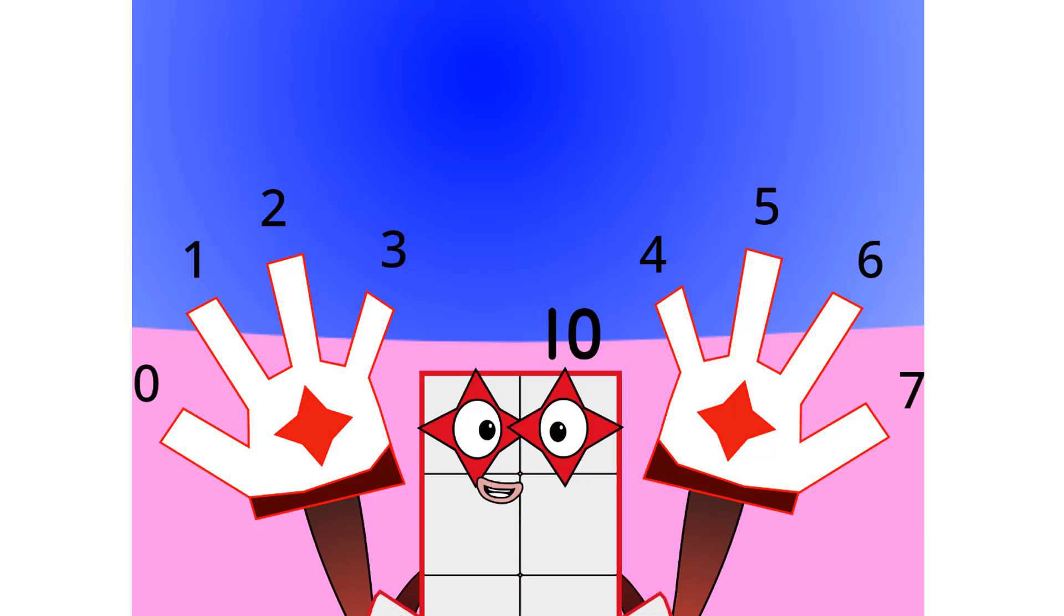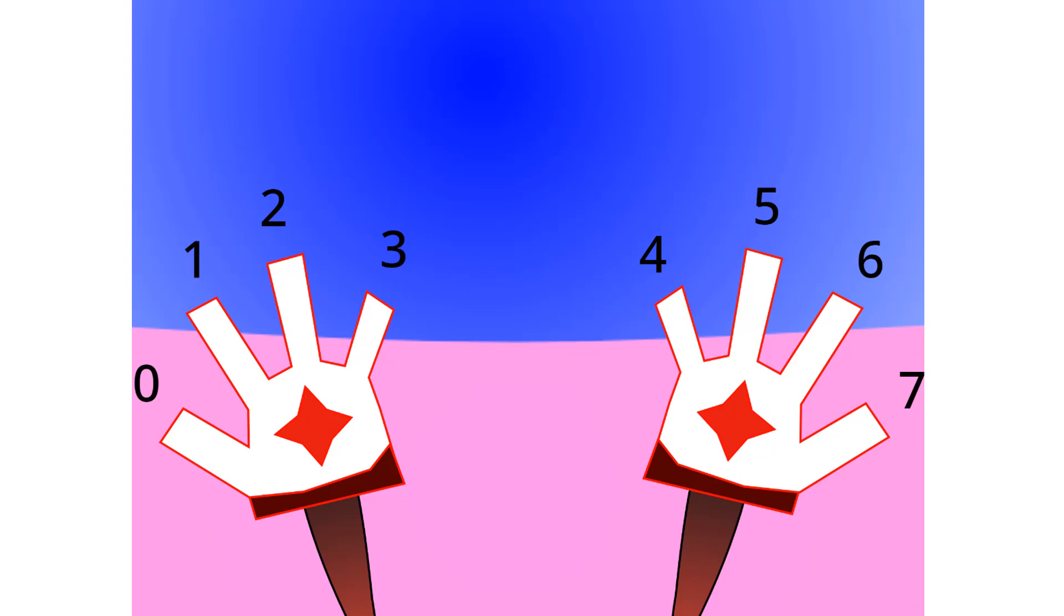Oh wow, looks like I am no longer Octoblock, but I am still called 8. So yeah, this base has eight digits: 0, 1, 2, 3, 4, 5, 6, and 7. Let's count in octal: 1, 2, 3, 4, 5, 6, 7, 10.